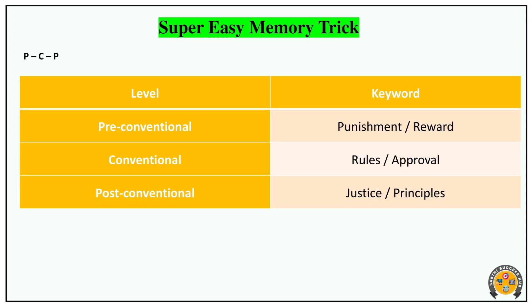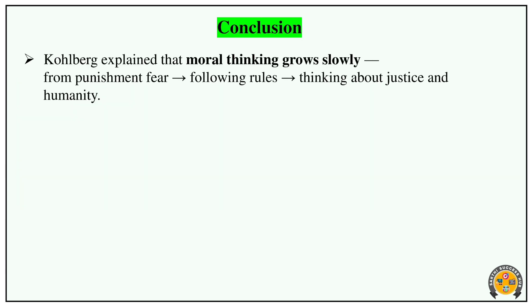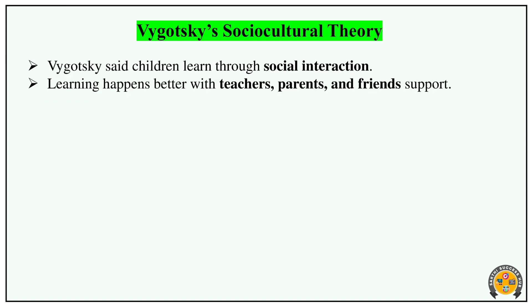A simple tip to remember Kohlberg's levels: Pre-conventional — punishments and rewards. Conventional — rules and approval. Post-conventional — justice and principles. This is moral development.